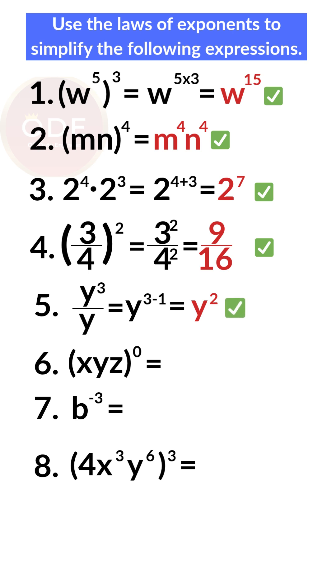Number 6: xyz to the 0 power equals 1. Number 7: b raised to negative 3. Using the negative exponent rule, make the exponent positive by taking the reciprocal of the base, giving 1 over b raised to 3.